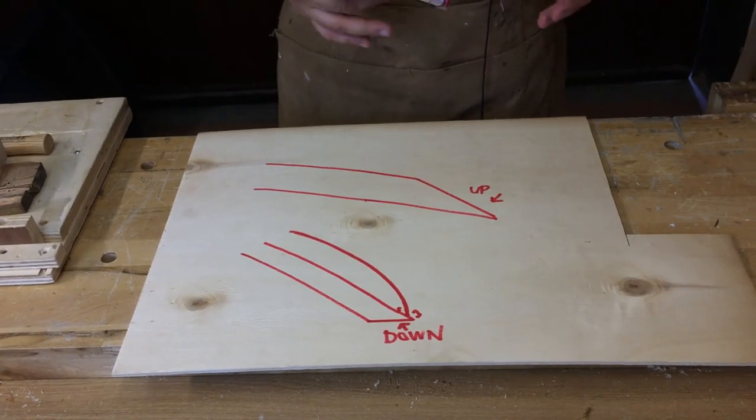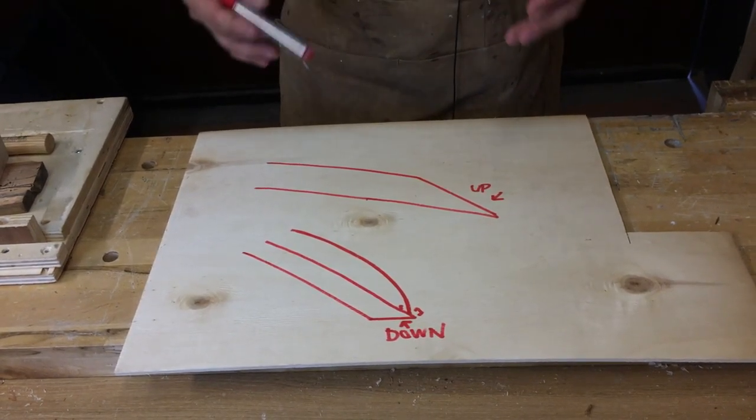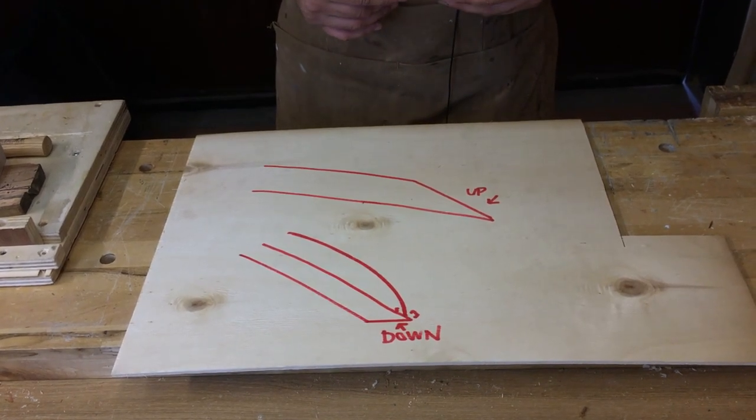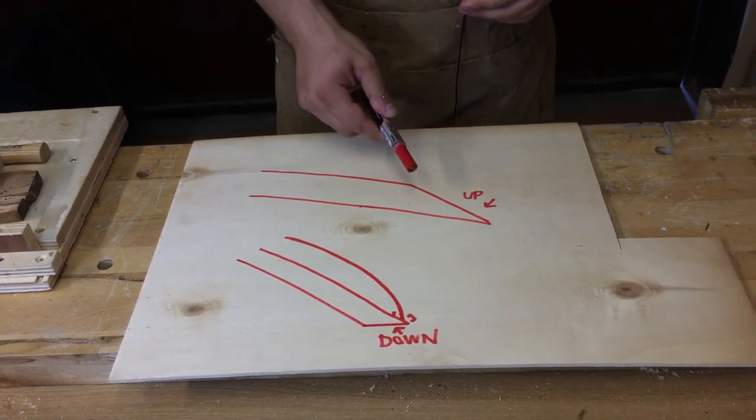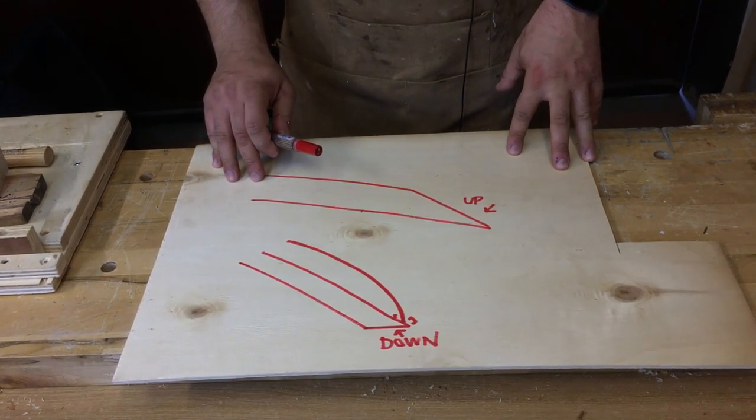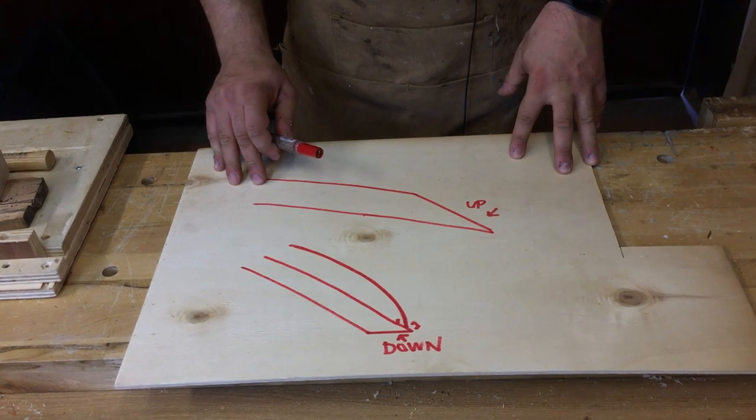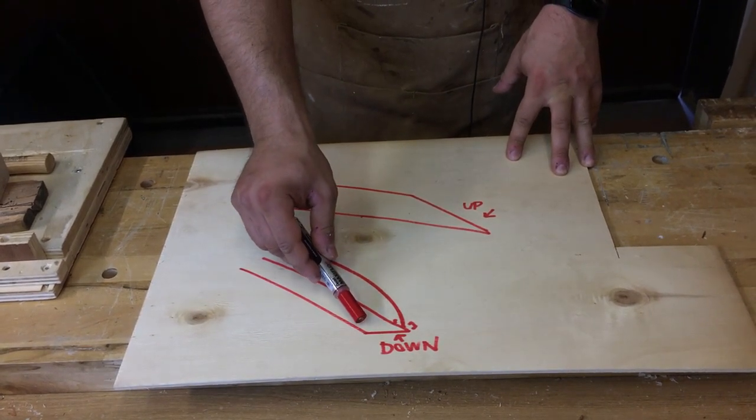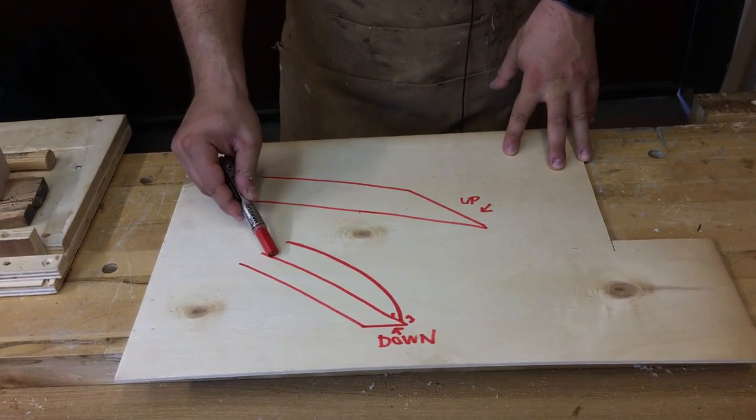We usually speak about low angle planes but from a theoretical point of view it would be better to speak about beveled up planes. Because the main difference between a low angle plane and the traditional one is that traditional planes have the bevel down with chip breaker.